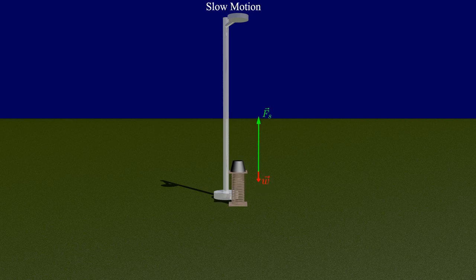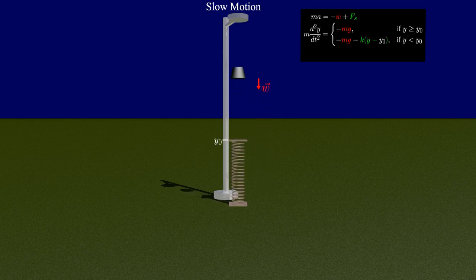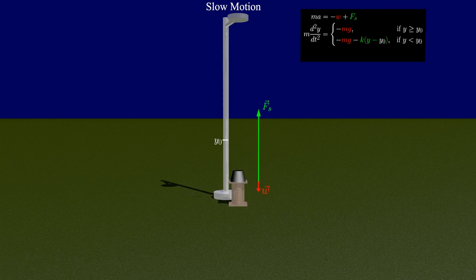The dynamics of the mass is a direct result of Newton's laws. We have two contributions to these dynamics. Above the spring's equilibrium height, we only have the mass's weight, while below, we also have the elastic force of the compressed spring.